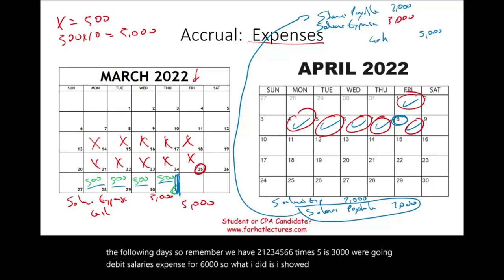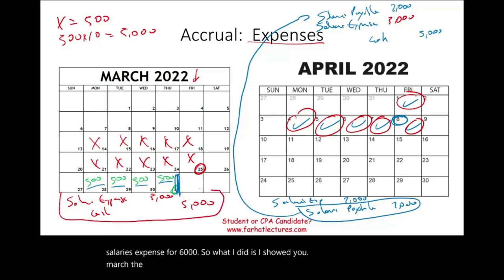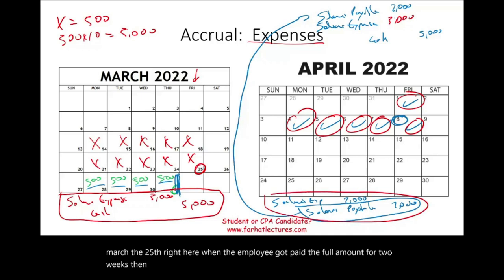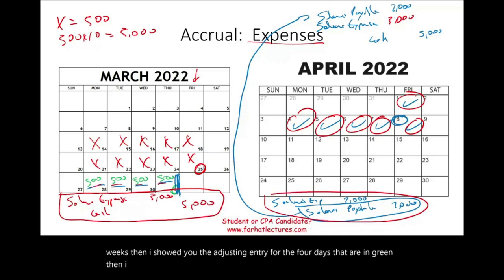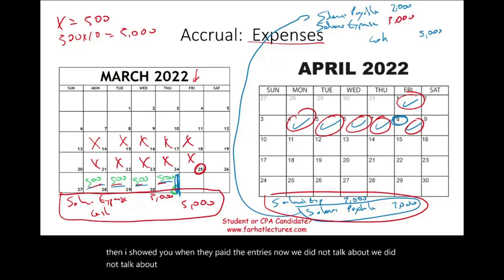So what I showed you was: March 25th when the employee got paid the full amount for two weeks, then the adjusting entry for the four days in green, and then the April 8th payment entry. We did not talk about reversing entries yet — this is the no-reversing scenario.